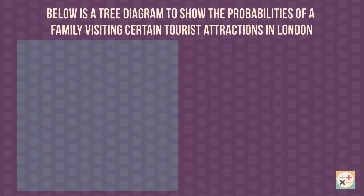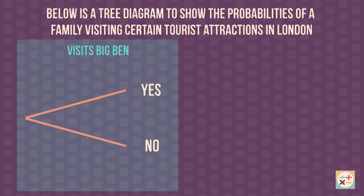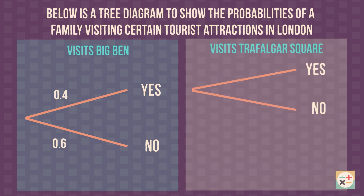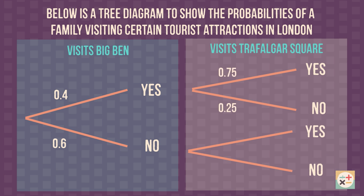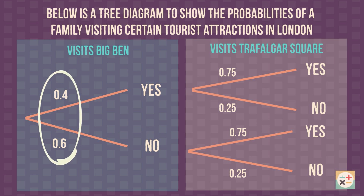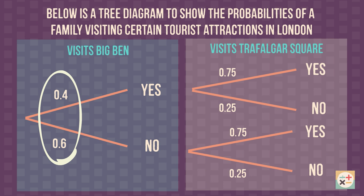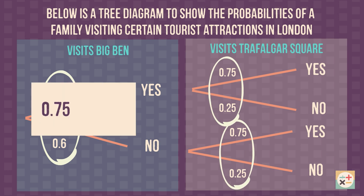This is because we end up with four possible outcomes in total after the two coin tosses. Let's look at another example. There are a few important things to remember when using a tree diagram to calculate probability. Firstly, for each set of branches that stem from a point, the probability must add up to one. You may find it easier to convert between decimals and fractions, depending on which you prefer working with.